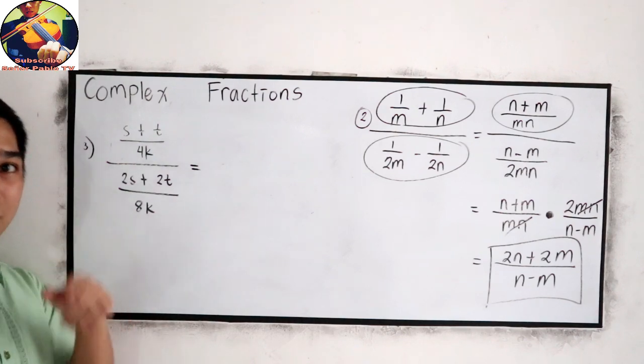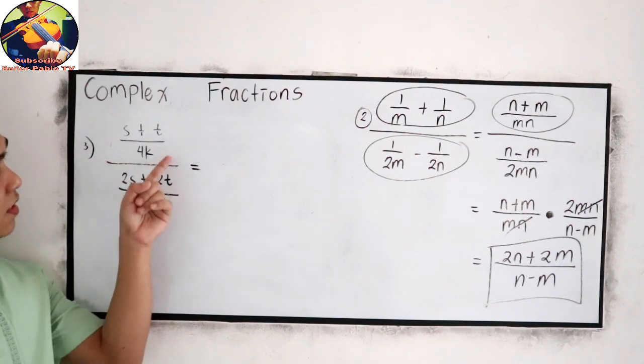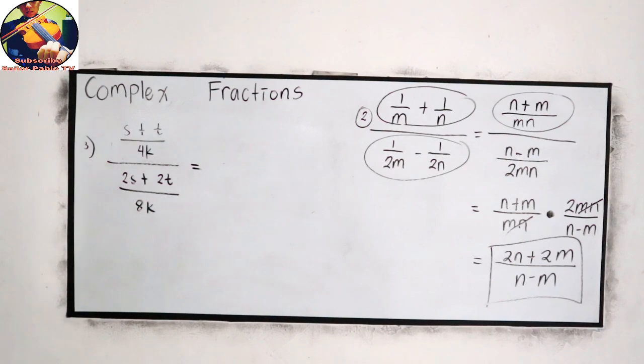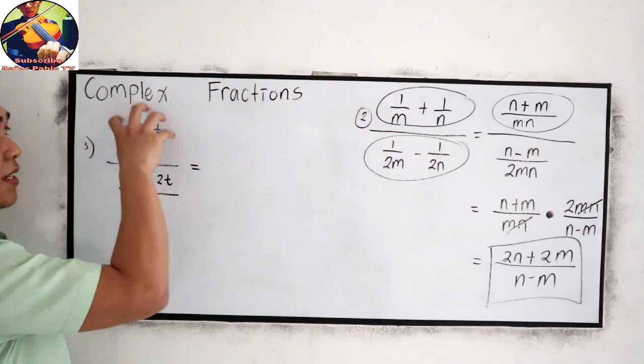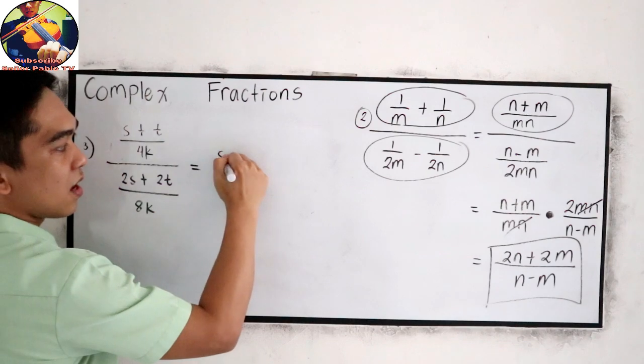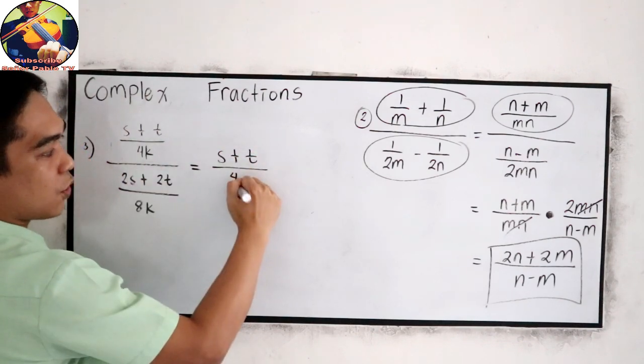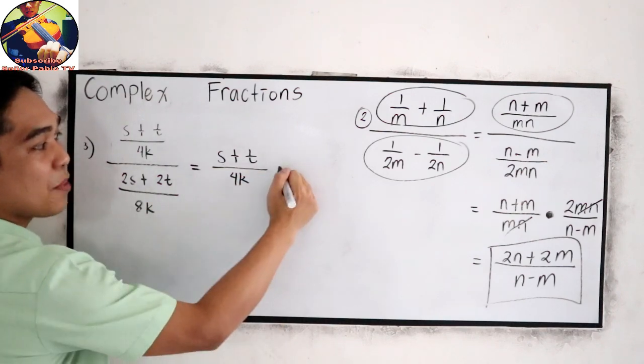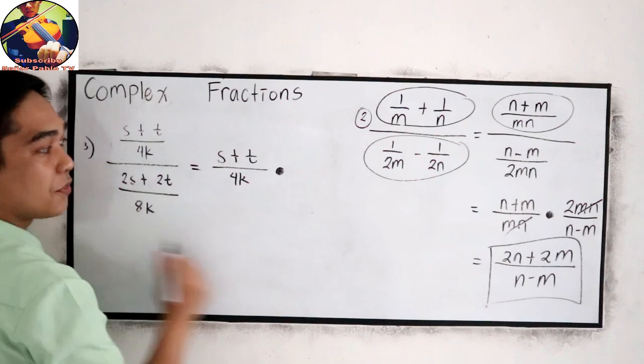You can pause the video then after answering, resume watching. Take a look in our numerator. It is a single rational expression. So copy s plus t all over 4k then proceed to multiplication.